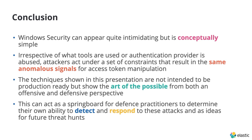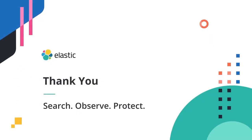In conclusion: hopefully I've shown that Windows security can be intimidating — things like Kerberos and NTLM can be complicated — but at a high level conceptually it's simple. Think of access tokens, logon sessions, and cached credentials — this is the framework from which it works and from which you can start compromising domains. Because of these constraints, irrespective of what tools you use or what authentication provider you're abusing, attackers are always under the same set of constraints. They always use these net-only gadgets to create sacrificial net logon sessions. So you'll see the same signals for irrespective of the kinds of attacks, even unknown attacks. These techniques show the art of the possible from both an offensive and defensive perspective, giving you a springboard for future threat hunting. Thank you very much.